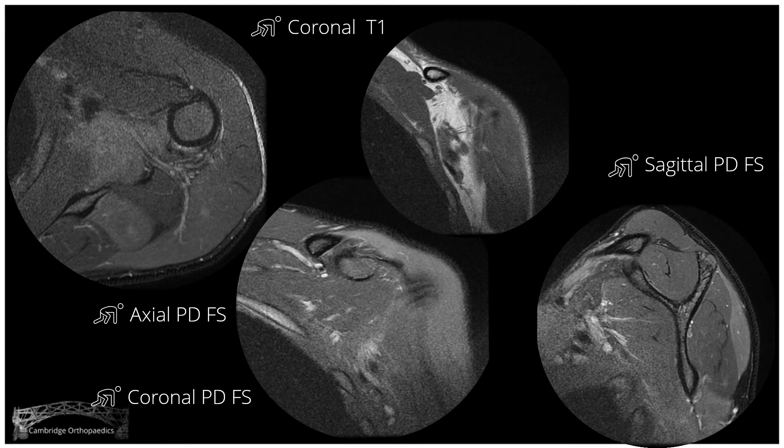What do you think of the greater tuberosity? What do you think of the supraspinatus muscle and tendon? Why can't he elevate his arm? Did you notice the increased signal on the T2 images — the proton density fat-suppressed images — within the deltoid and within teres minor? Did you see the greater tuberosity healed with minimal displacement on the proximal humerus, and supraspinatus tendon and muscle in continuity?